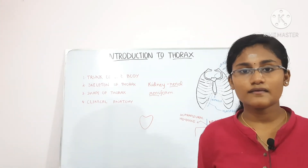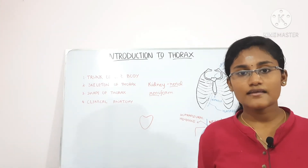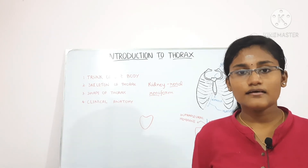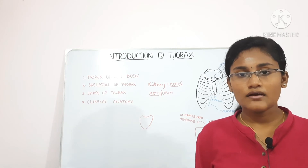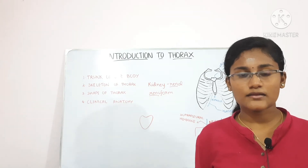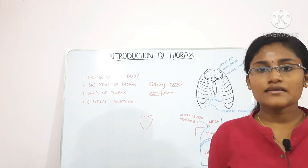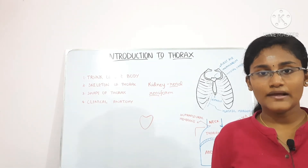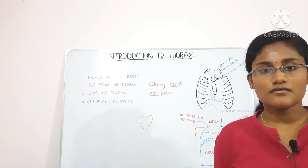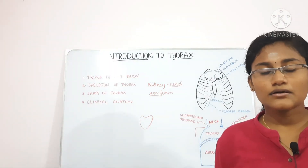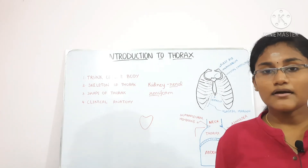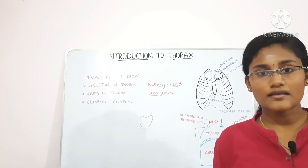In infants, the ribs are horizontal, resulting in purely abdominal respiration — the diaphragm moves up and down due to abdominal movements. In adults, the thorax is oval and the ribs are oblique, so inspiration and expiration occur due to rib movements, which is called thoracic respiration. In adults both thoracic and abdominal respiration exist, whereas in infants only abdominal respiration exists.